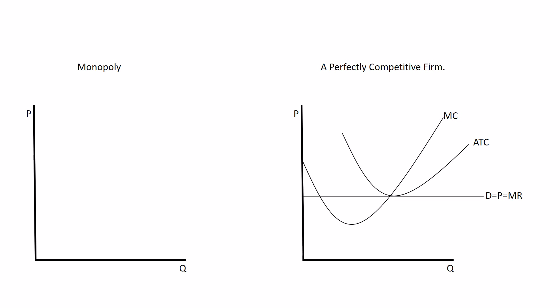So what we've done so far on the right is there was a perfectly competitive firm. And because it was perfectly competitive, its demand curve was perfectly elastic or horizontal. Demand was horizontal, which meant price was horizontal, which meant that marginal revenue was horizontal.